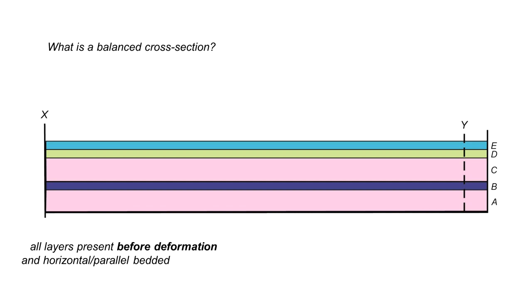In other words they look like this so all the layers are present before deformation and they're horizontal and parallel to one another and in this particular situation we've leveled them up A as the oldest and E as the youngest.